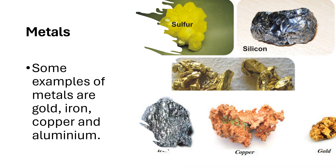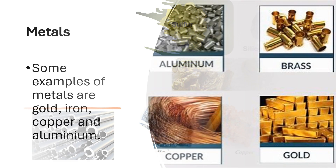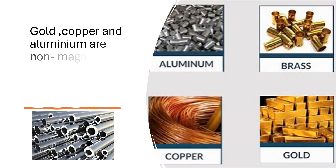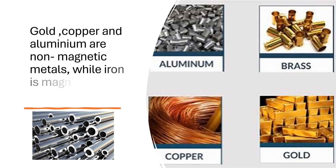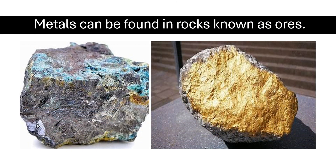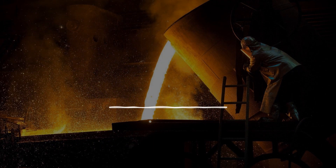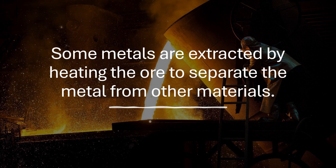Metals. Some examples of metals are gold, iron, copper, and aluminium. Gold, copper, and aluminium are non-magnetic metals, while iron is a magnetic metal. Metals can be found in rocks known as ores. Some metals are extracted by heating the ore to separate the metal from other materials.